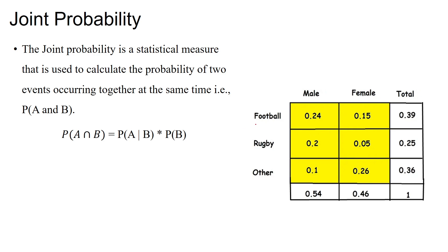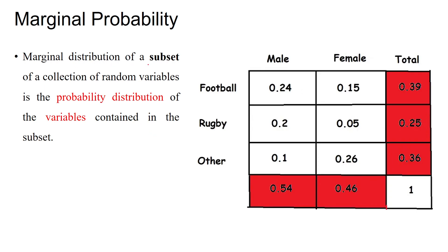Here 39% of people are watching football and 25% are watching rugby simultaneously. We calculate this as: probability of A intersection B equals probability of A given B multiplied by probability of B. By using conditional probability we can calculate the joint probability. Marginal probability is defined as the probability distribution of a subset of a collection of random variables — those variables contained within that subset.